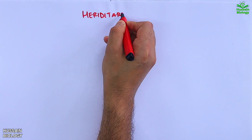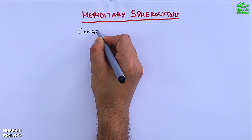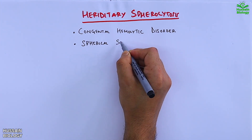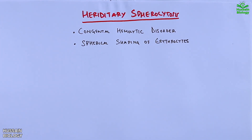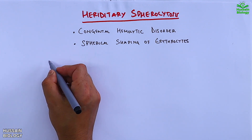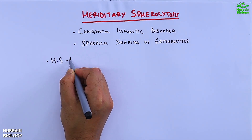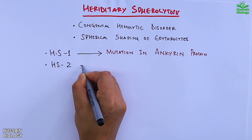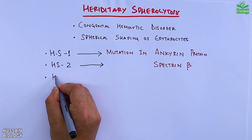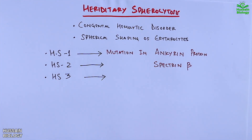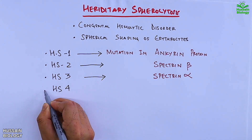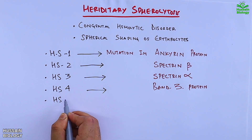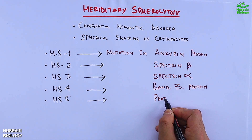Hereditary spherocytosis is a congenital hemolytic disorder where we get spherical shaping of erythrocytes. Its subtypes are: HS1, due to mutation of ankyrin protein; HS2, due to mutation in beta-spectrin; HS3, due to mutation in alpha-spectrin; HS4, due to mutation in band 3 protein; and HS5, due to mutation in protein 4.2.